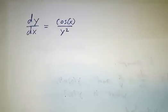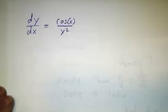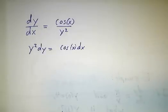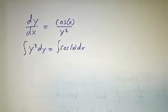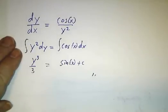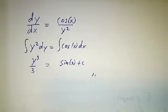As another example, let's suppose we had dy/dx is cosine of x divided by y squared. Well, cross multiply, integrate both sides. You get y cubed over 3 is sine of x plus a constant.